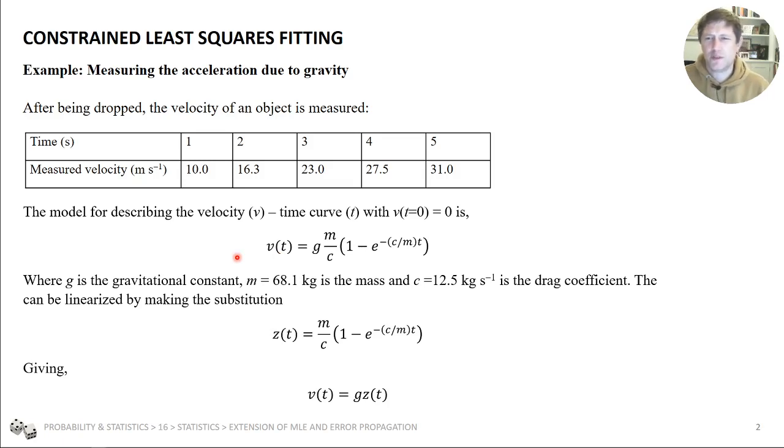Now, because we've been able to create that model, we can linearize it by making a substitution. So let's substitute z with t for this part of the expression here, m divided by c, 1 minus the exponential term. What does that mean? Well, for each set of data we have, we can calculate what this is. We know m, we know c, we know t. And so we can calculate a new parameter, z, which is going to give rise to a linear response.